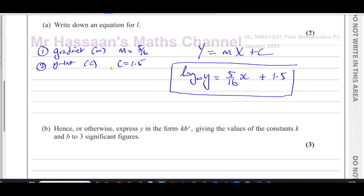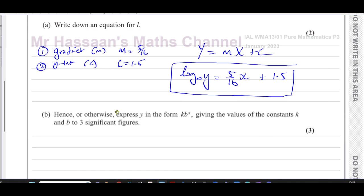Now for part b, it says: hence or otherwise, express y in the form k times b to the power of x, where k and b have to be found and expressed to three significant figures. So what we need to do is rewrite this in exponent form. This is in logarithm form; we want to write in exponent form. That's basically what they're asking us to do here.